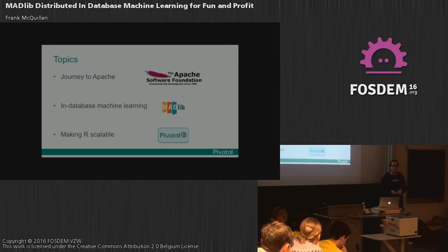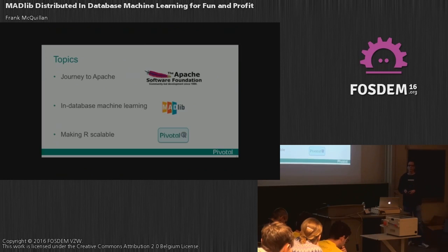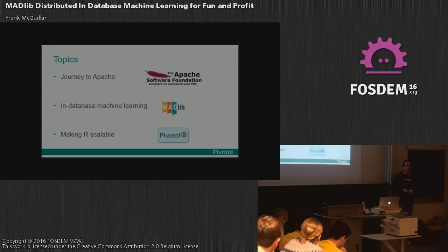The topics I'd like to cover are: the journey to Apache for Madlib, because it's not a new open source project; then database machine learning in a bit more detail; the architecture of Madlib; and finally making R scalable — Madlib also has an R interface for folks interested in R.